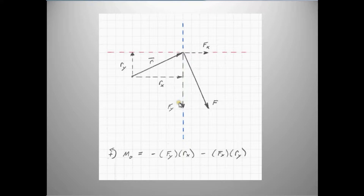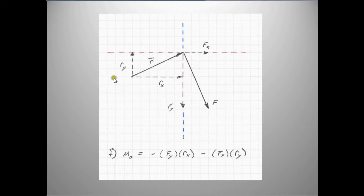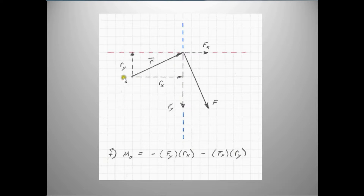We can get the exact same thing when we change the situation where the force vector is acting in a different direction. Again, we break the R vector into an x component and a y component. In this particular case, F y times R x is in the clockwise direction, so it comes in as negative, and R y times F x is also clockwise. So both components come in as negative. What I'm trying to show is that depending on where the force is and where the point of location is, the components can be positive, negative, or both positive — it all depends on the geometry.